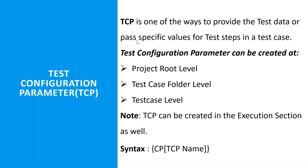Before going further, we have to understand that a test configuration parameter can be created at three levels: number one, project level; number two, test case folder level; number three, test case level. We cannot create TCP at the test step level. TCP can also be created in the execution section.